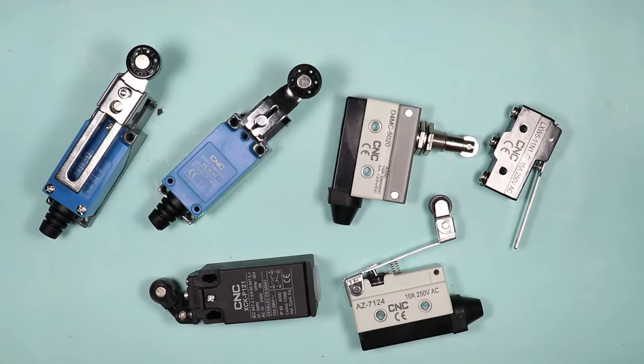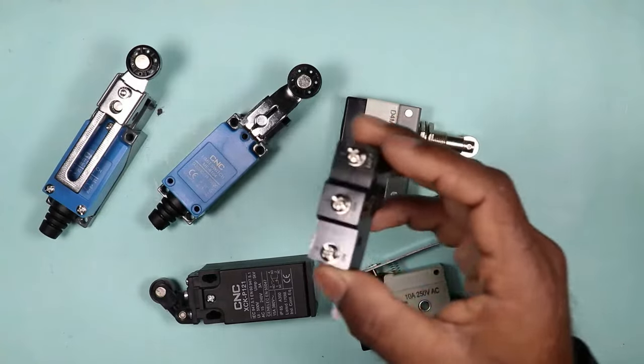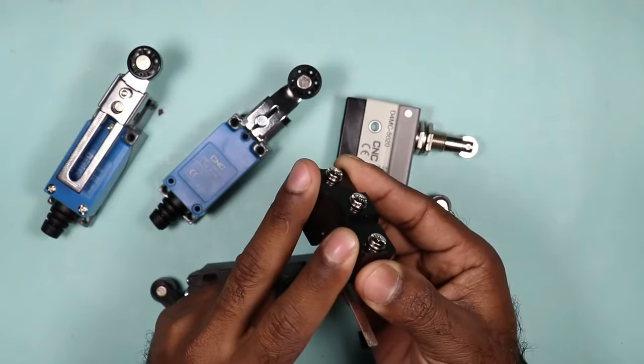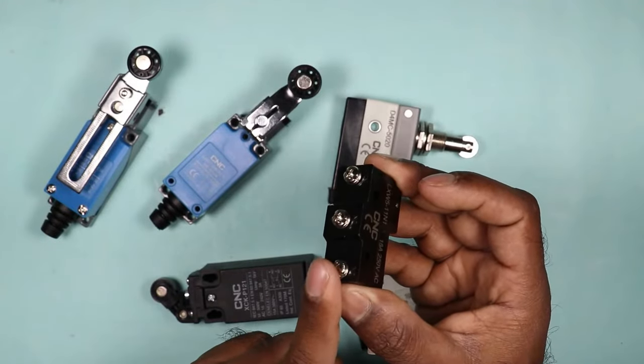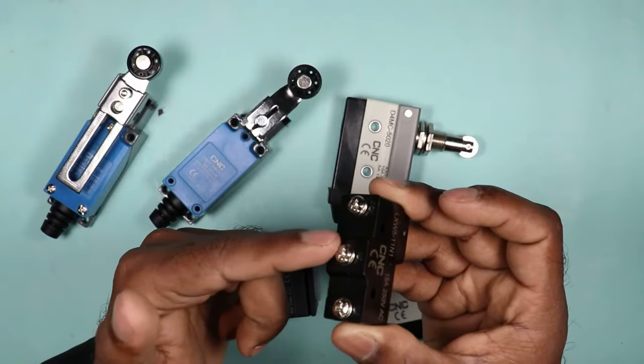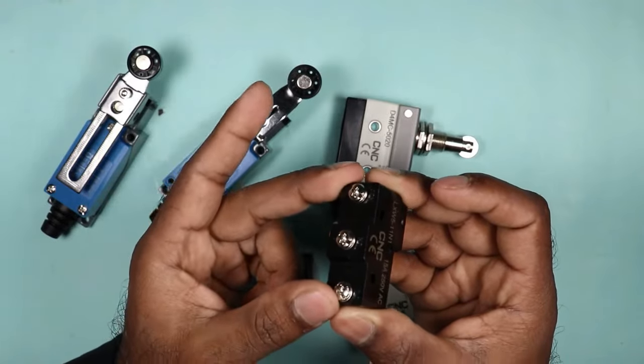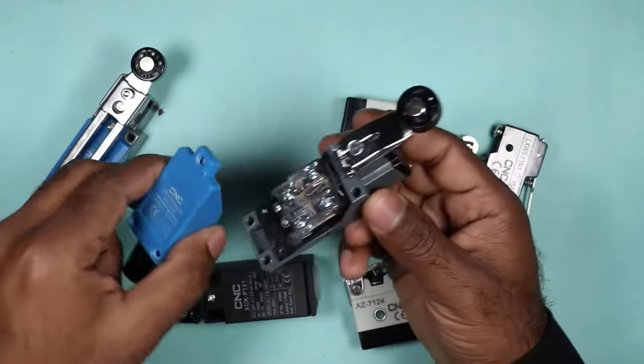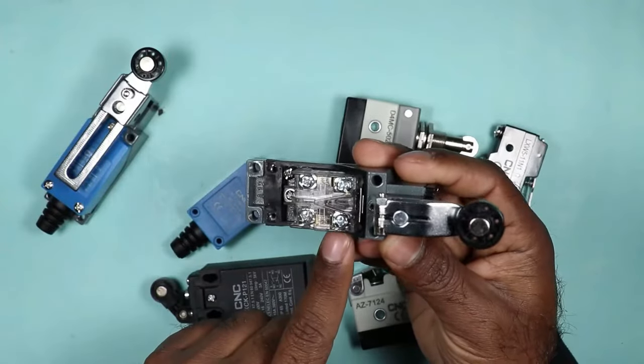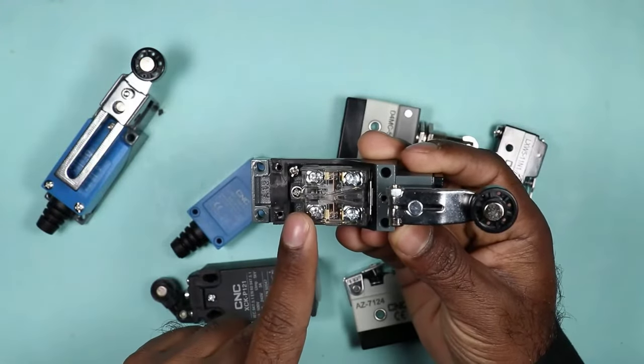For wiring in limit switch, if you look closely, in some limit switch, two terminals are provided. In some limit switch, you will find three terminals. In this limit switch, this point is common, this one is NO, and this is NC. For three terminals, common NO and NC are given. If in your limit switch, four terminals are provided, then two will be NO and two will be NC.